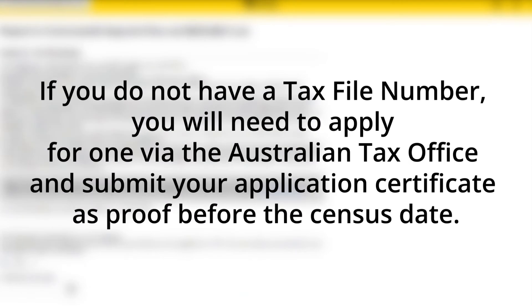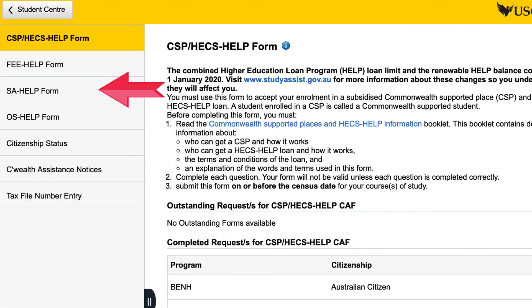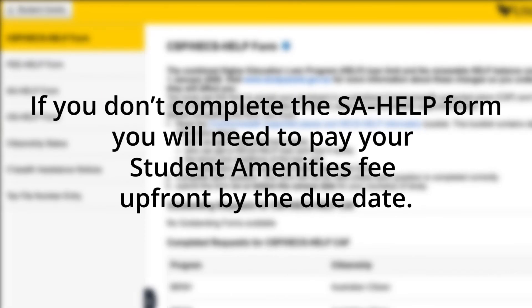If you do not have a tax file number, you will need to apply for one via the Australian Tax Office and submit your application certificate as proof before the census date. Once the form has been completed and submitted, you are done. If you'd like to defer your Student Amenities Fee, you will also need to complete the SA HELP Commonwealth Assistance Form. Otherwise, you will need to pay your Student Amenities Fee upfront by the due date.